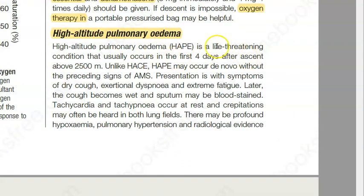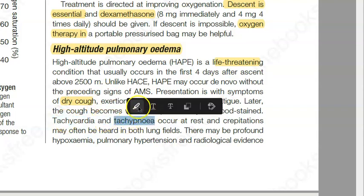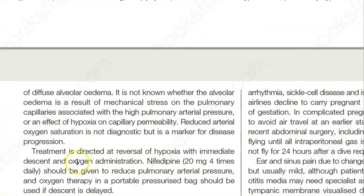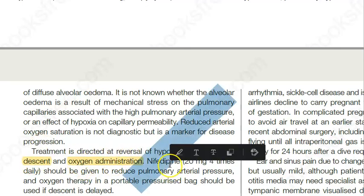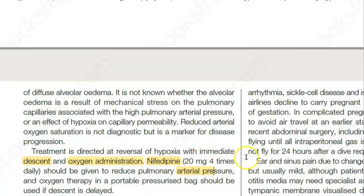Now pulmonary edema is also life-threatening. There can be dry cough — we already told you to be careful distinguishing that. Symptoms include tachypnea, respiratory symptoms, exertional dyspnea, and extreme fatigue. For these people, tell them to descend, take oxygen, and take nifedipine — a calcium channel blocker — which will reduce pulmonary arterial pressure to help stop the edema. Oxygen therapy is given in a portable pressurized bag, because the atmospheric pressure is less — that is the whole point of pressurizing.